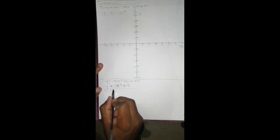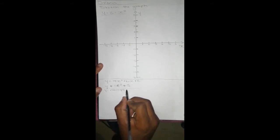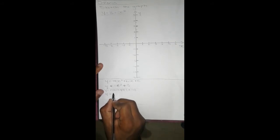To get the y-intercept, x equals zero. Therefore, y equals zero squared plus 3, y equals 3. Therefore, the point of y-intercept is going to be zero and 3.